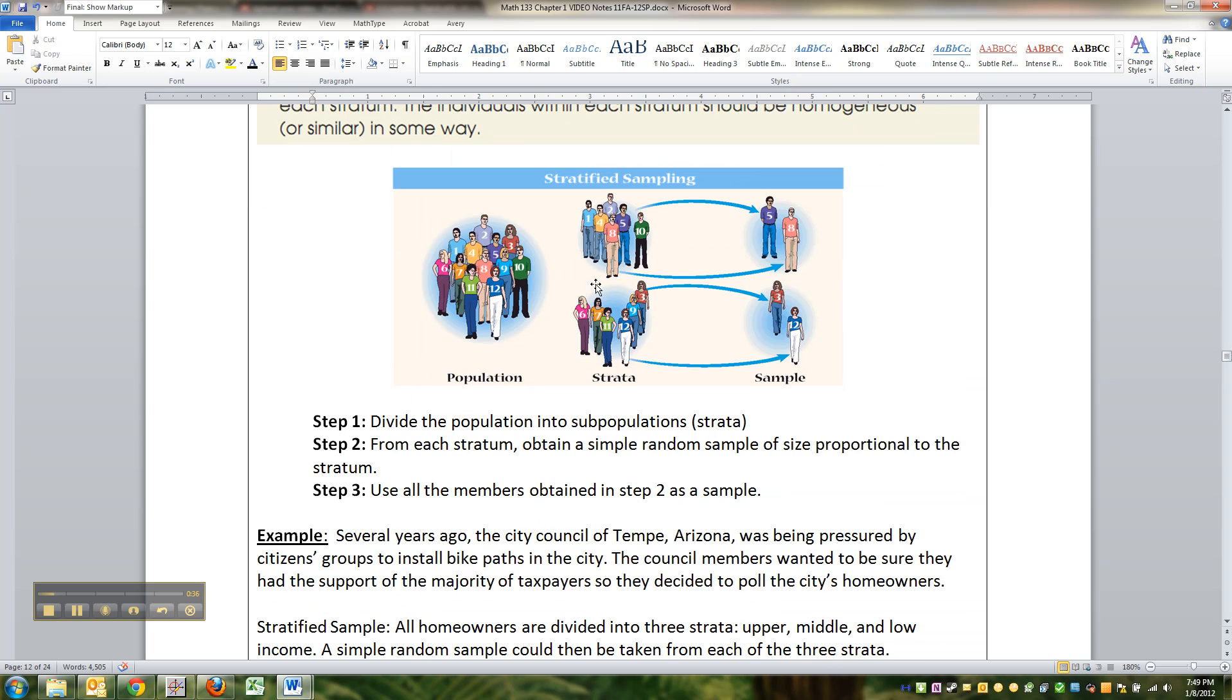So they've got a lovely picture here. You have a population that has all sorts of people, numbered 1 through 12. And what they do is they separate the men and the women. Those are called strata. All the men are alike, all the women are alike. And then they get a random sample from each of those strata.